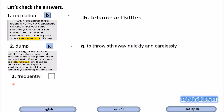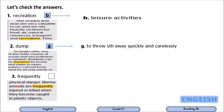Let's move to word number three: frequently. Marine animals are frequently injured or killed when they become caught in plastic objects. So when marine animals are caught in plastic objects, they are killed or injured frequently — which means very often. It goes with D: frequently means very often.